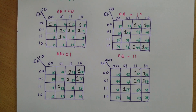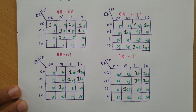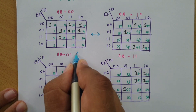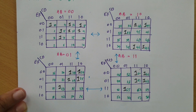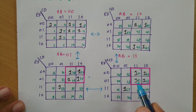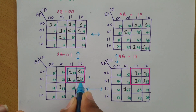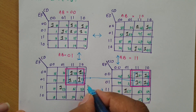Now we need to form groups — the largest groups possible. You can see that these two can be combined, and these two can be combined, and these two can be combined to form a larger group. This four and this four can be combined together to form an eight-cell group. So this is my first group — an eight-cell group.